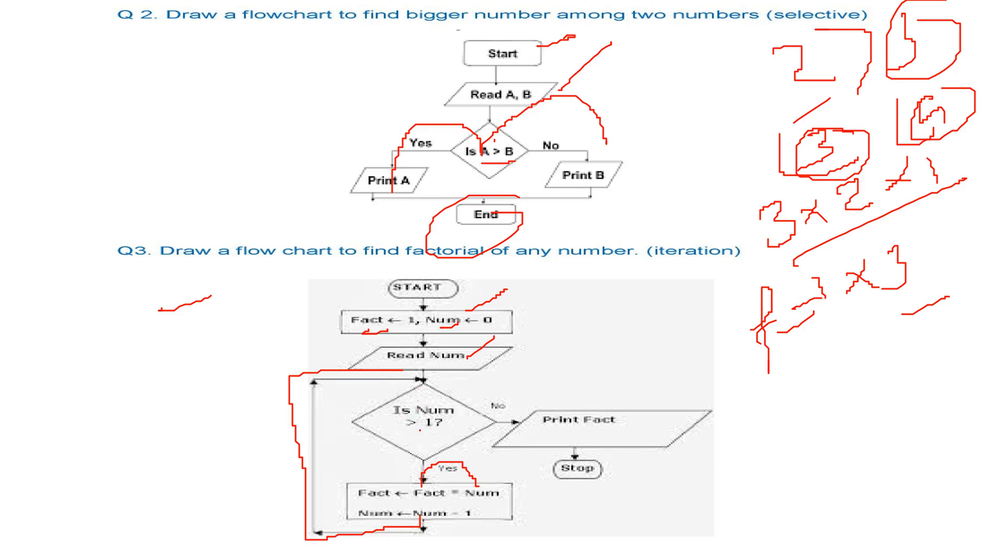Now we re-iterate it. This is a loop. So we re-iterate it because the number is greater than 1 still. So this 3 has become 2. So this num into fact. So now fact is 3 into 1, that is 3.